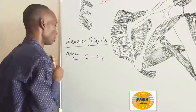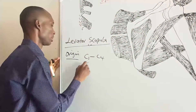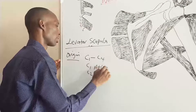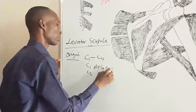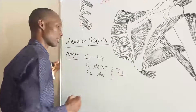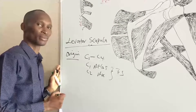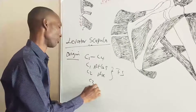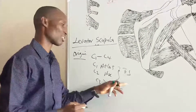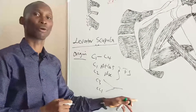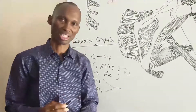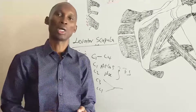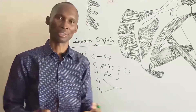In this C1 to C4, between C1 and C2 — that is atlas and axis — it takes origin from the transverse processes. For C3 and C4, the origin is also from transverse processes but from the posterior tubercle of the transverse processes. So if we say it takes origin from the transverse processes of C1 to C4, that is still correct.